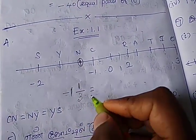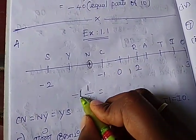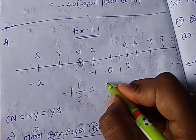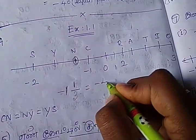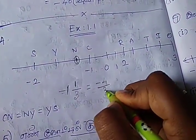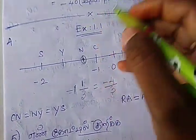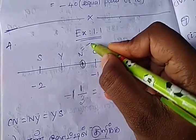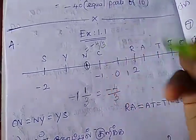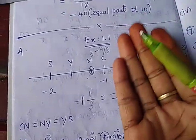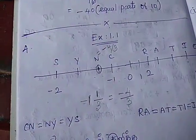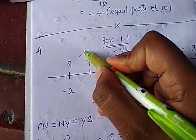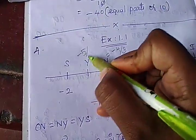So this will convert to the normal fraction. 1 and 1/3: 1 times 3 is 3, plus 1 equals 4. So minus 4 by 3 — that is the value of N. So N equals minus 4 by 3. Next term value is minus 5 by 3.